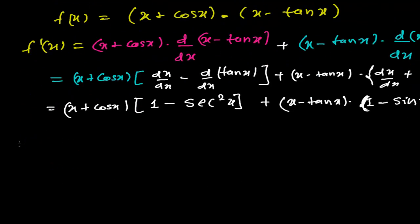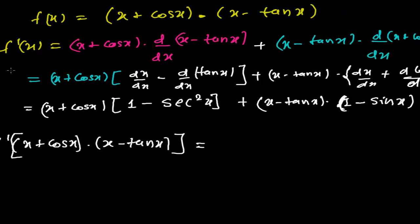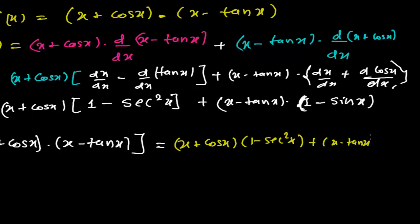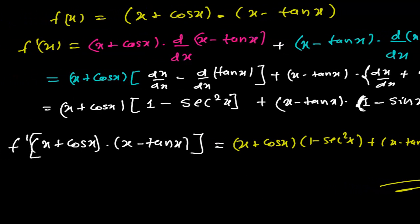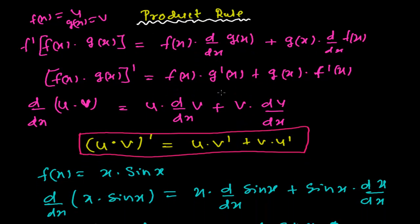So d/dx of (x + cos x)(x − tan x) equals (x + cos x)(1 − sec²x) plus (x − tan x)(1 − sin x). Like this we use the product rule to find the derivative of different functions. I hope you understand how to use the product rule. In later videos we'll be doing some more tough problems of the product rules. Bye-bye.